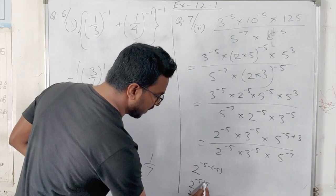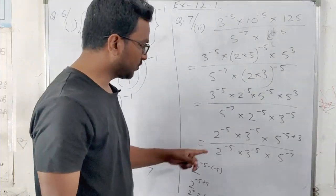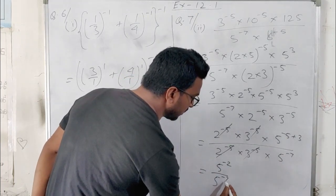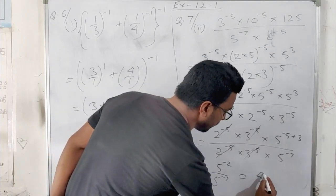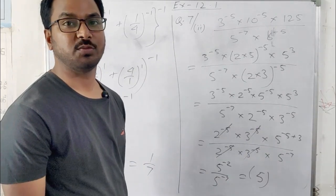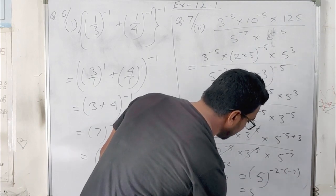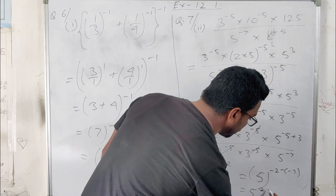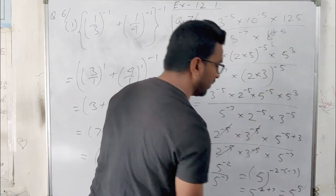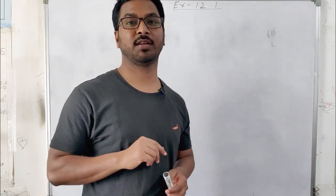Question 6: evaluate. The power is minus 1, so taking the reciprocal makes it positive. This gives 3 by 1 to the power 1, which is 3, plus 4 by 1 to the power 1, which is 4. So we get 3 plus 4 equals 7, and 7 to the power minus 1 means we take the reciprocal, giving the final answer 1 by 7.